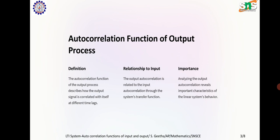Autocorrelation function of the output process. Definition: The autocorrelation function of the output process describes how the output signal is correlated with itself at different time lags. Relationship to input: The output autocorrelation is related to the input autocorrelation through the system transfer function. Importance: Analyzing the output autocorrelation reveals important characteristics of the linear system behavior.